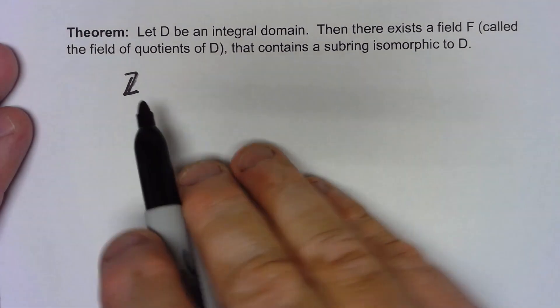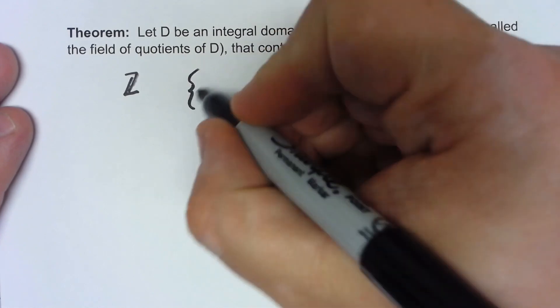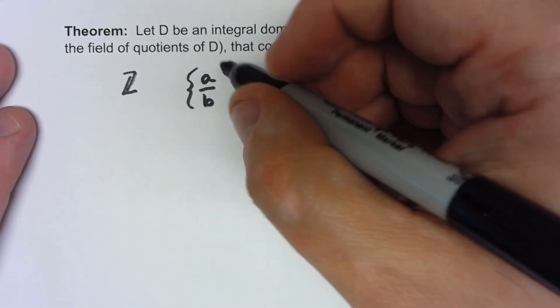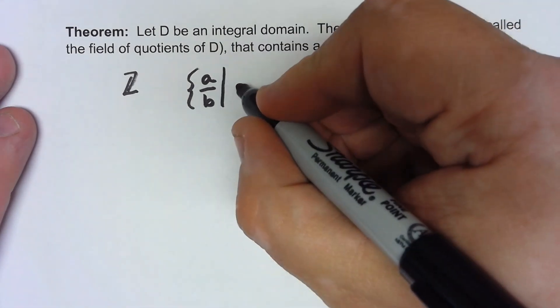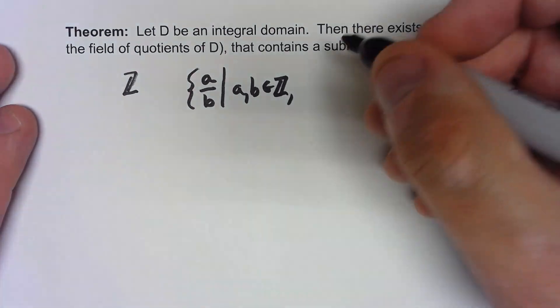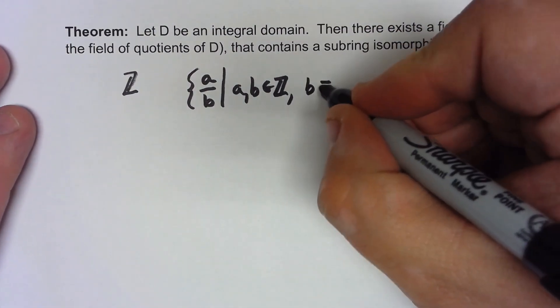What we did was we said we're going to take the set of all things a over b such that a and b are in the integers and b is not equal to zero.